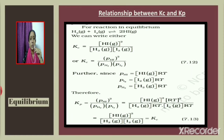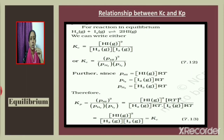Since n/V gives concentration, we get P = C·RT. This is the relationship between pressure and concentration. Applying this: P(HI) = [HI]·RT and P(I₂) = [I₂]·RT, P(H₂) = [H₂]·RT.